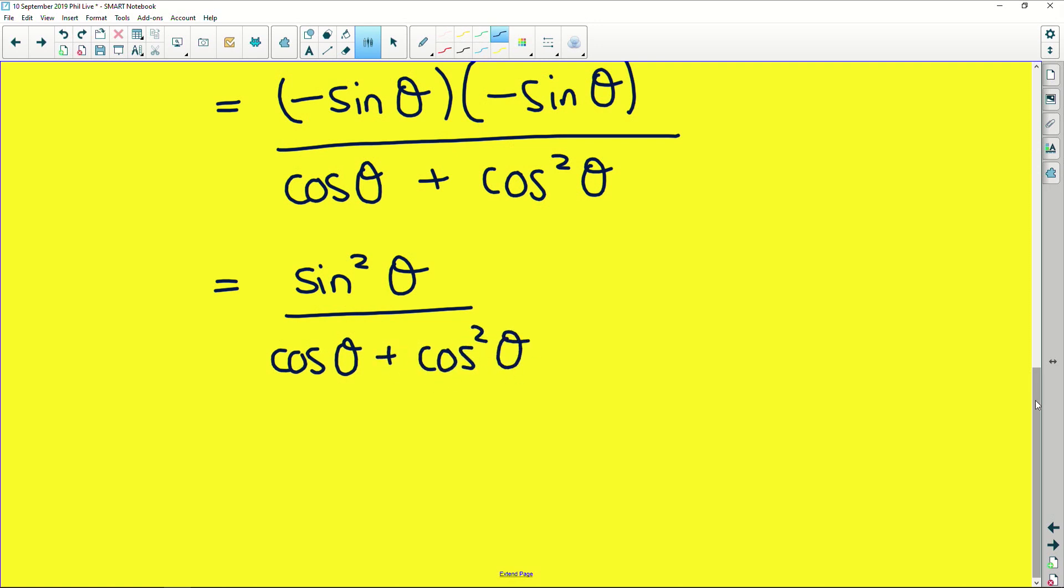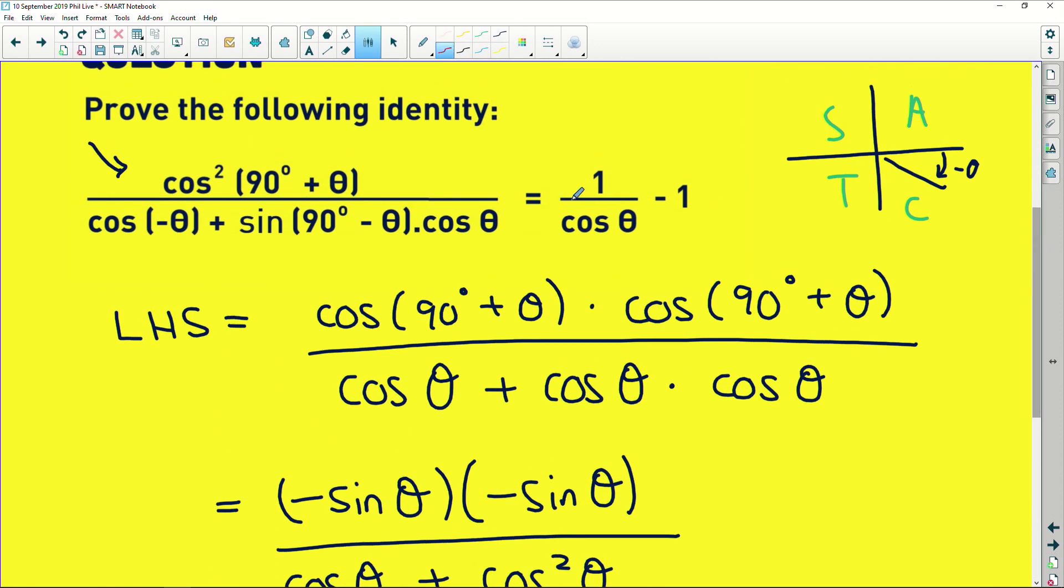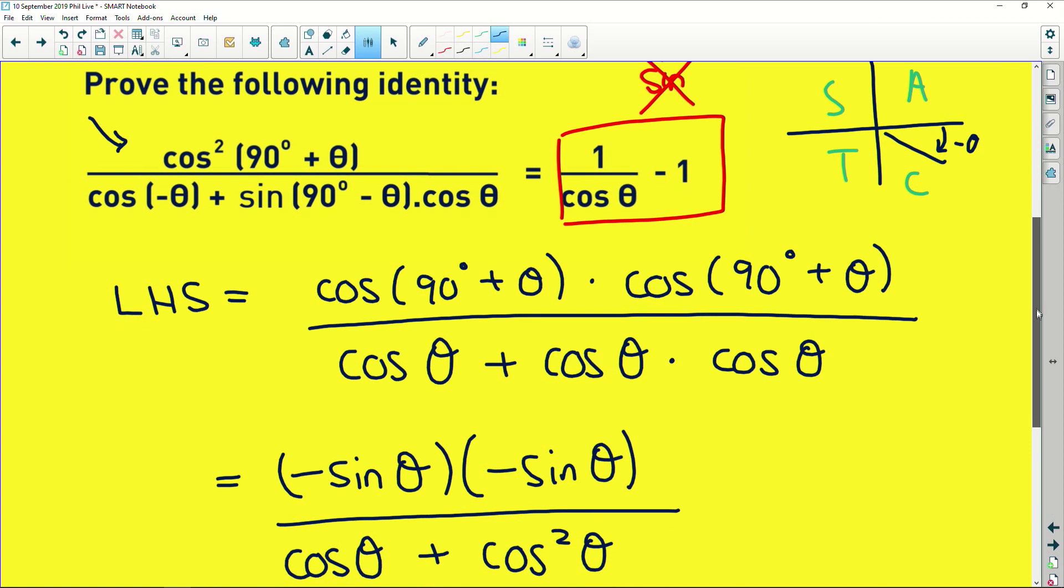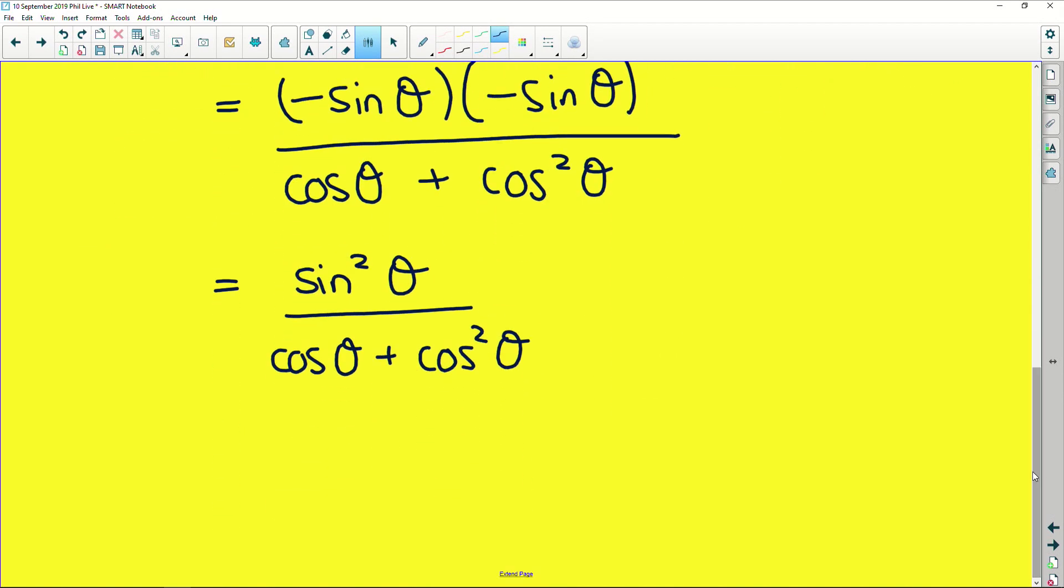So now, if we look at the right-hand side that we're trying to make this look like, there are absolutely no sines, as in sine ratios, in this right-hand side. So we need to try and get our entire left-hand side expressed in terms of cos. So how do we do that? Well, in this numerator, remember, sin²(θ) is the same as saying 1 - cos²(θ), because sin²(θ) + cos²(θ) = 1. Fundamental identity. So if we manipulate that, we get this for sin²(θ).